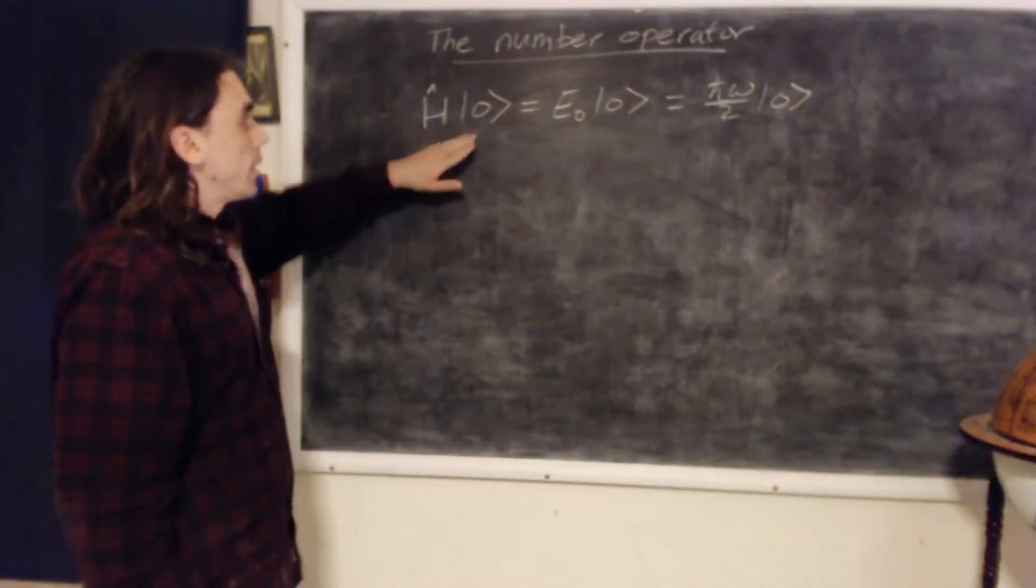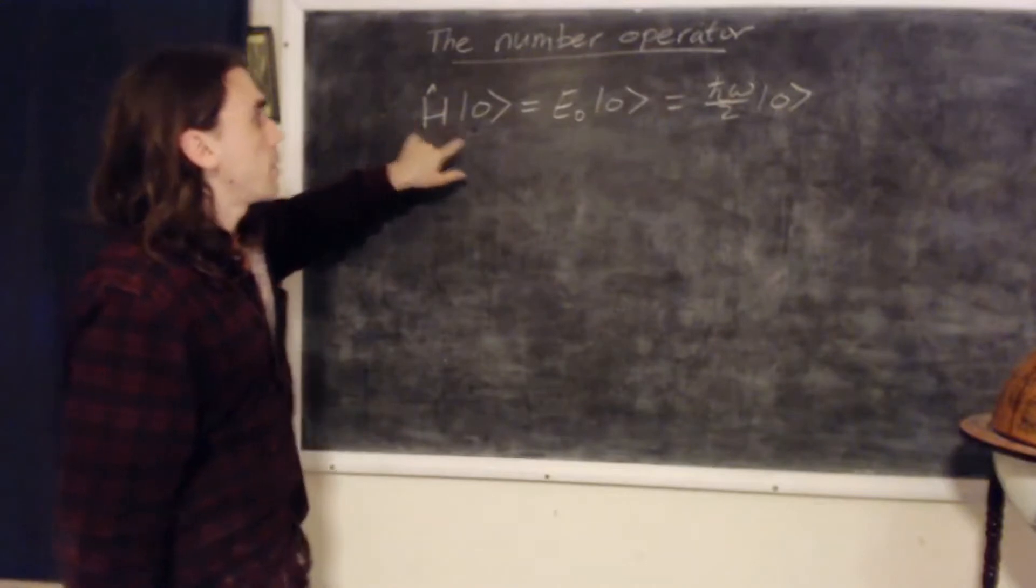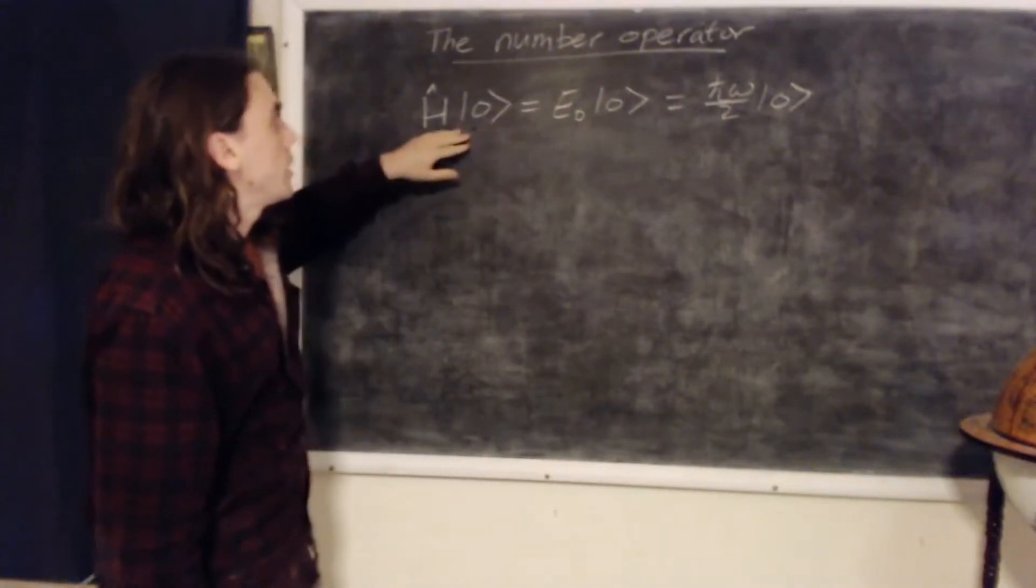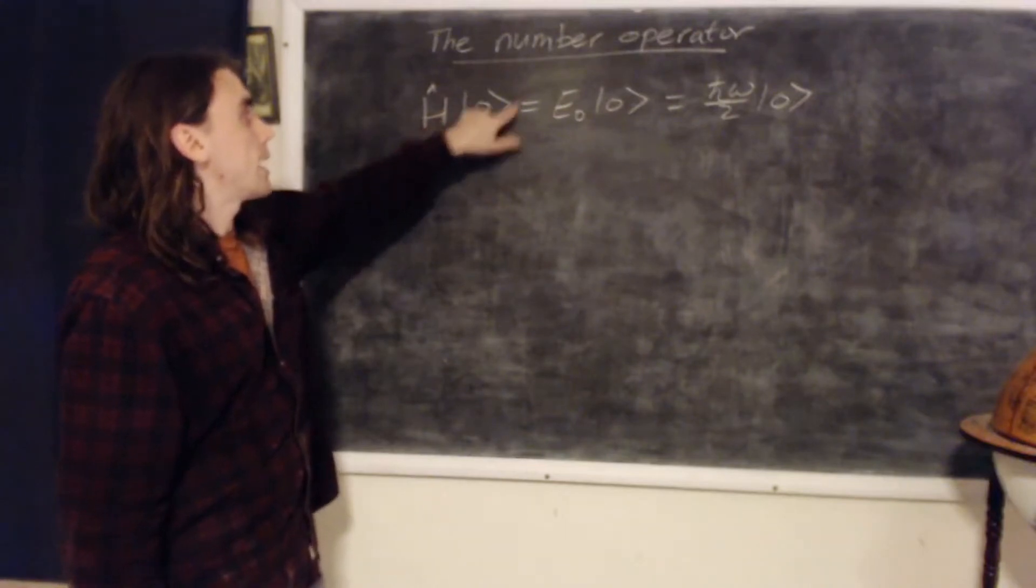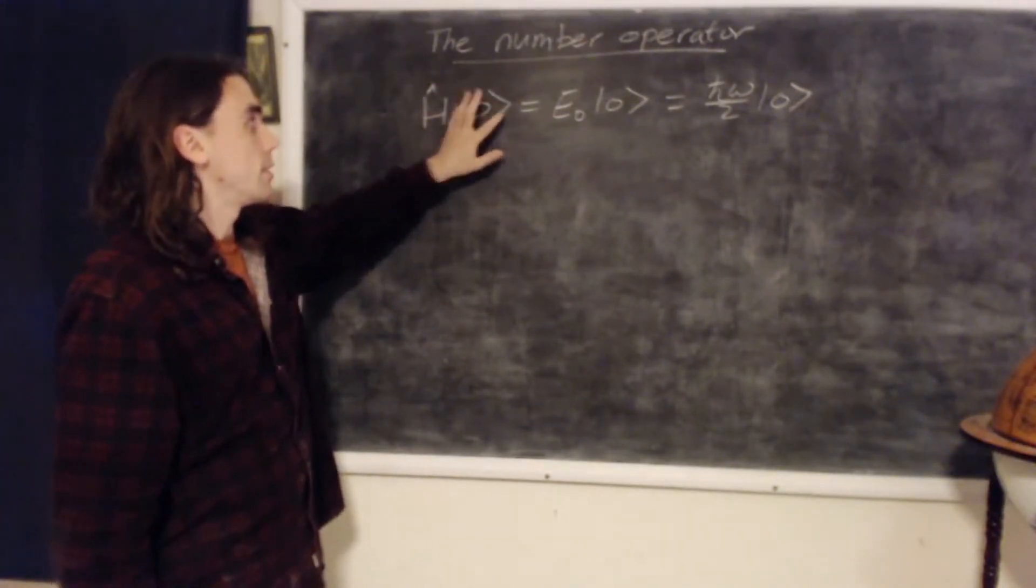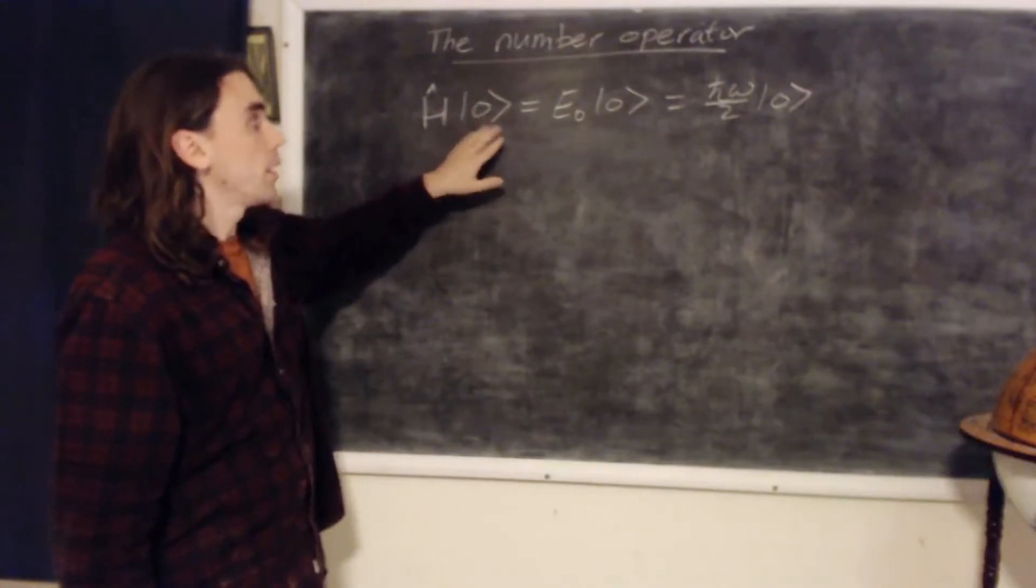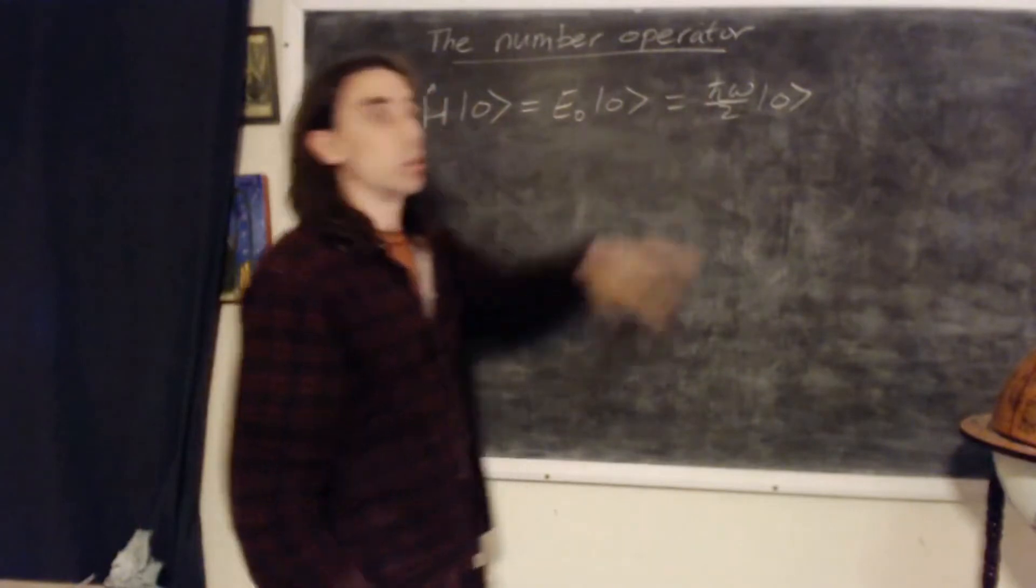So in the previous video we found the ground state of the system. We found that the time-independent Schrödinger equation for the ground state, which we defined to be this ket with a zero in it, zero here is just a label telling us that it's the ground state, this is not the number zero, it's the state zero, gives us the value E zero which is h bar omega over two.